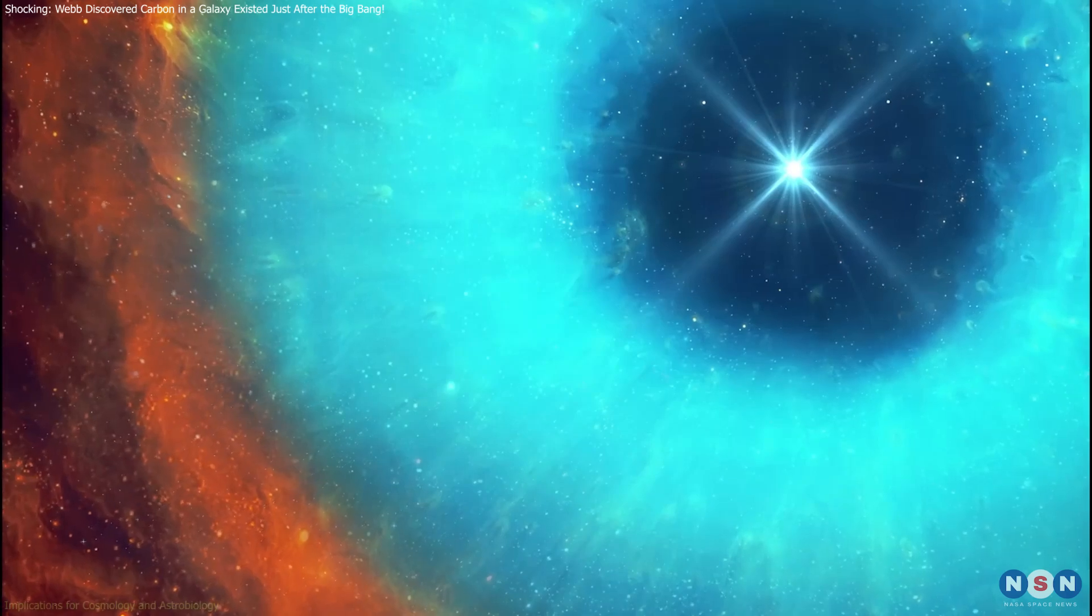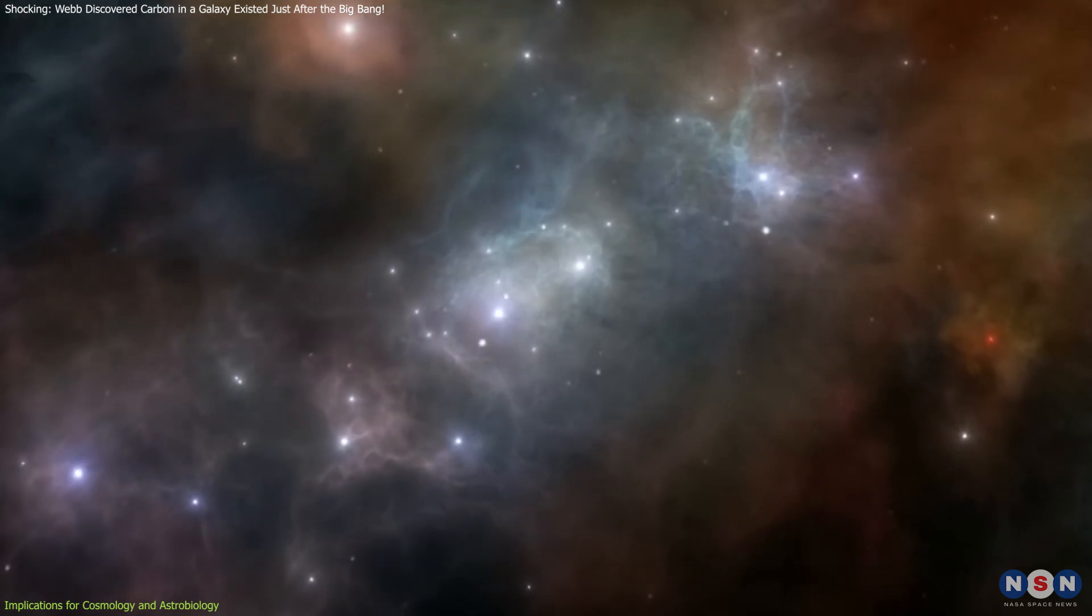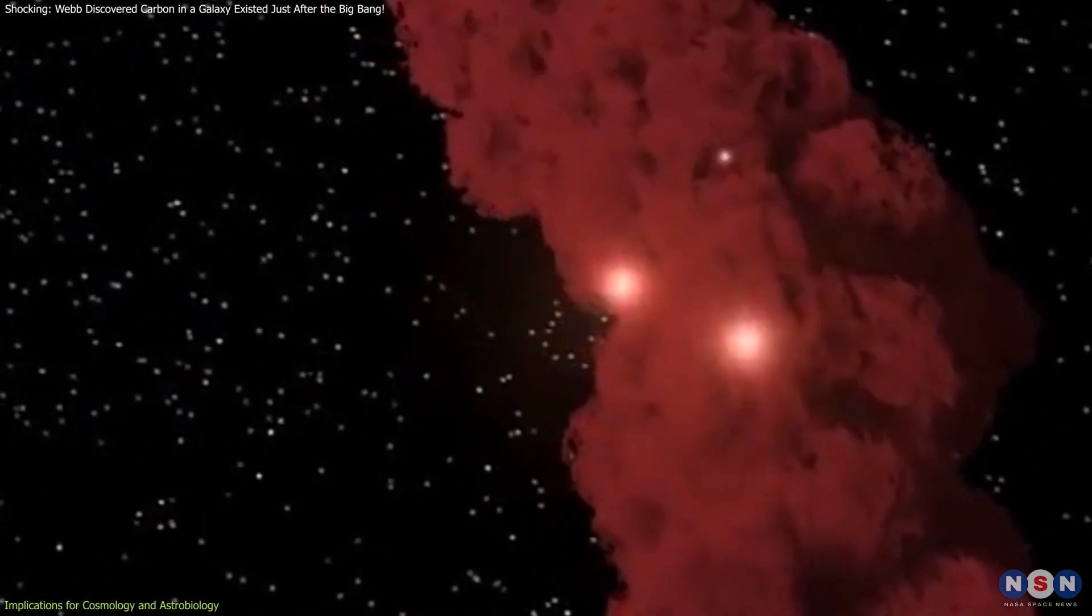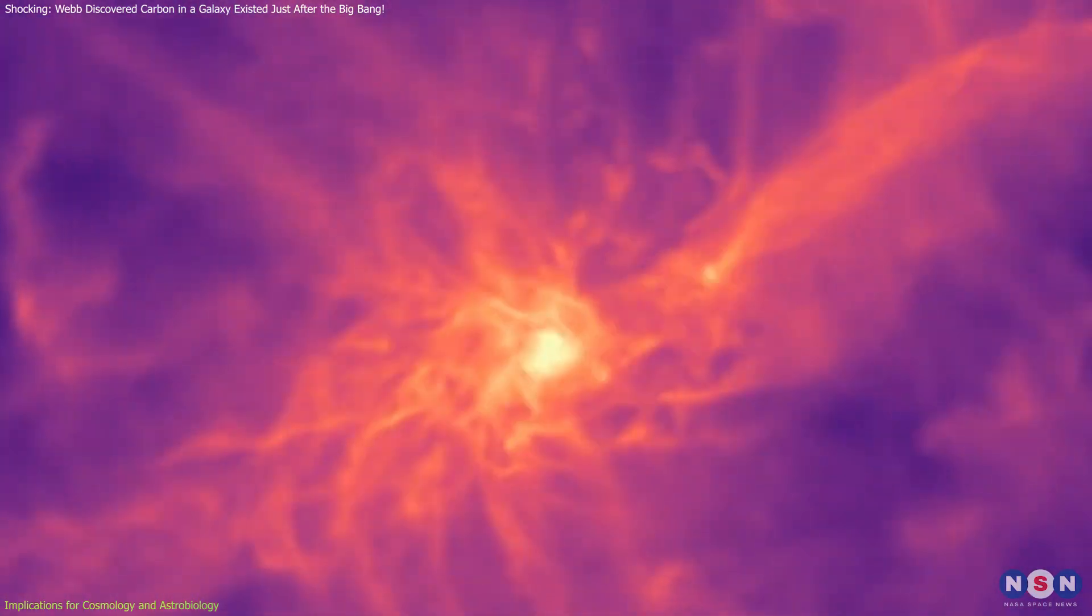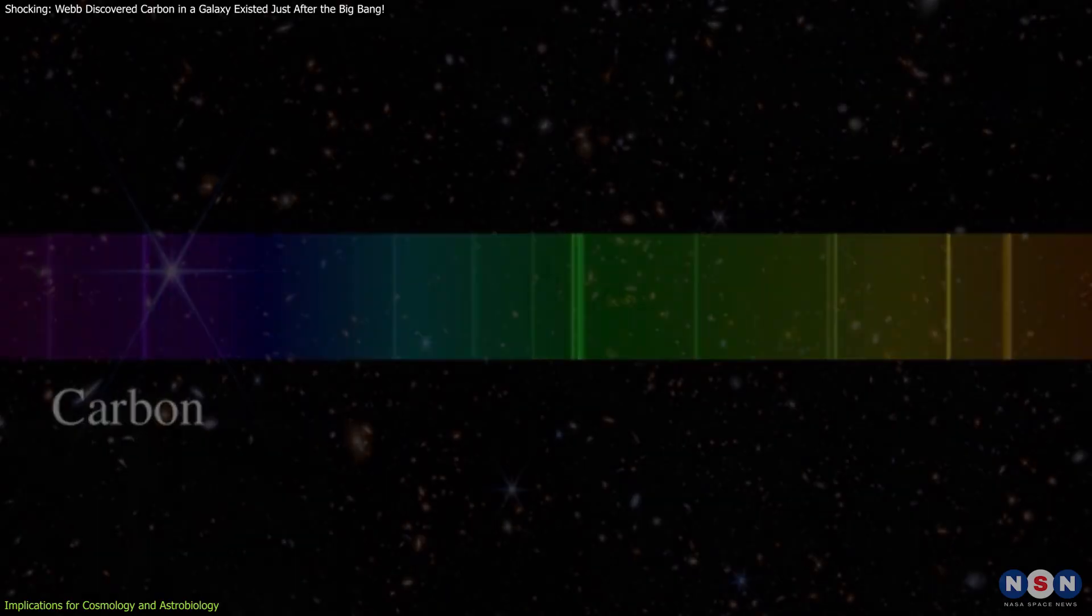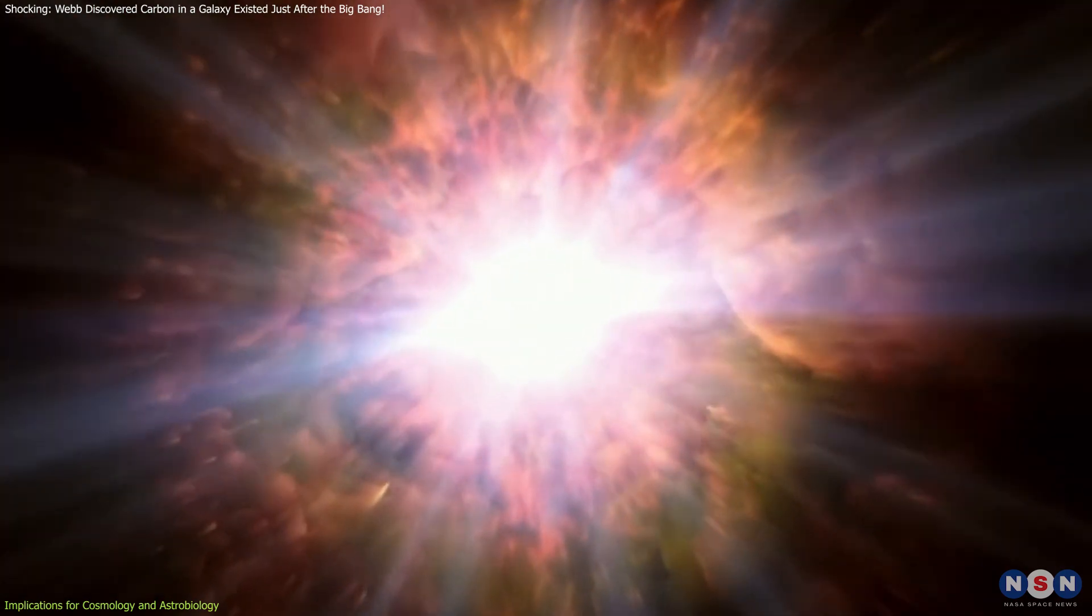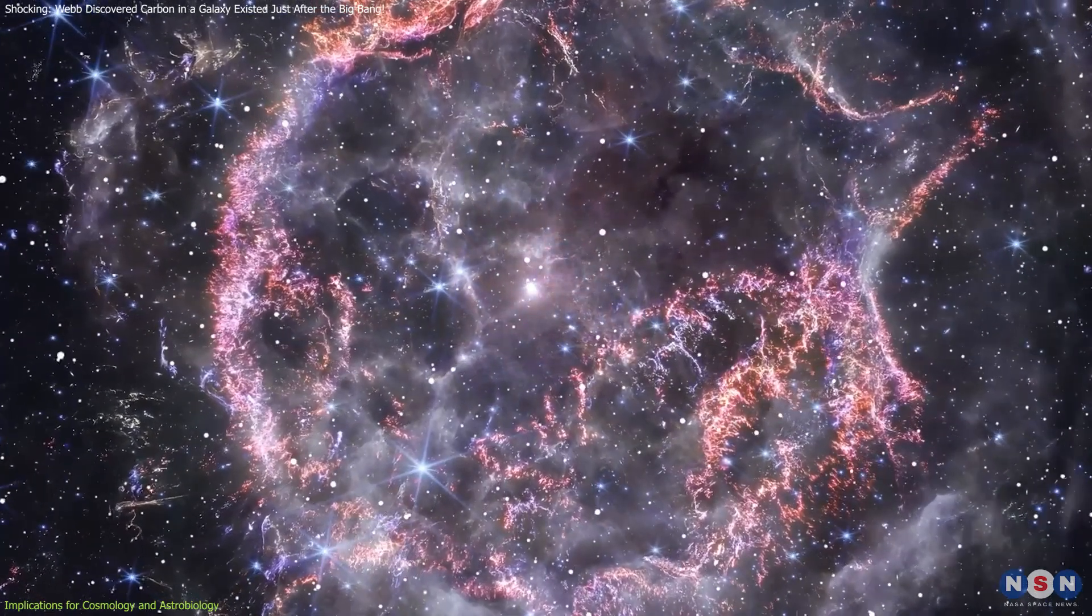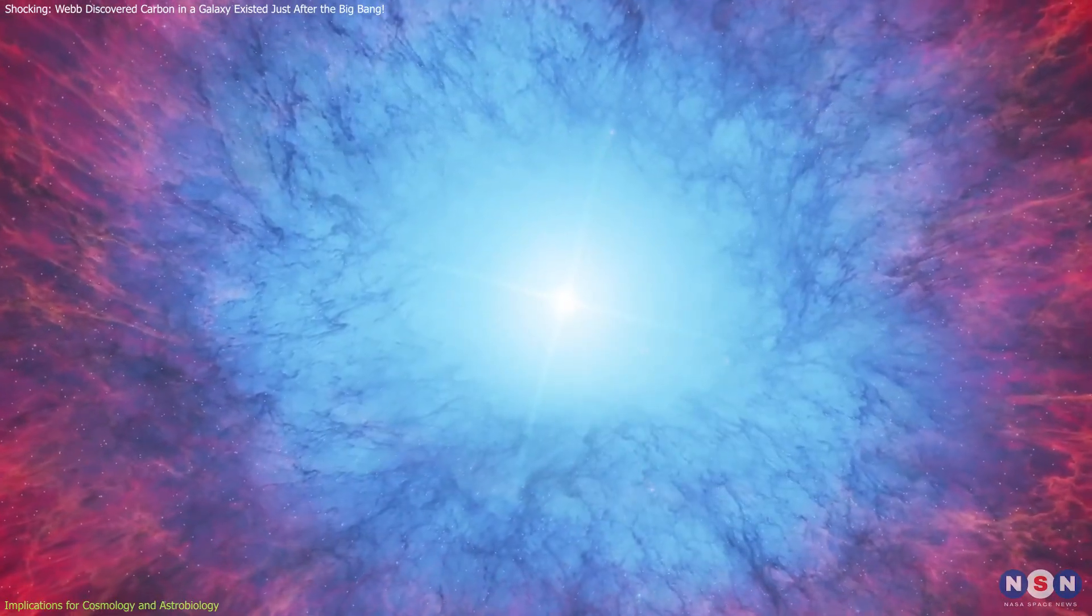This discovery reshapes our understanding in several key areas, like star formation and the early life cycle of stars. We know that carbon is crucial for star formation, as it influences the cooling processes that allow gas clouds to collapse and form stars. The early presence of carbon suggests that the universe had a higher metallicity, or abundance of heavier elements, than previously thought. This increased metallicity implies that the first stars formed in a more chemically enriched environment, potentially affecting their formation and evolution.